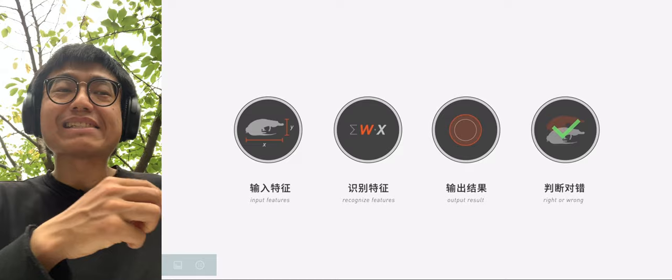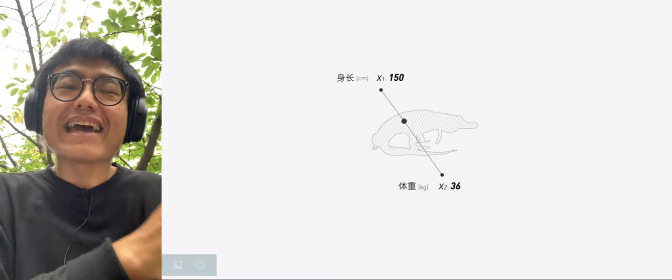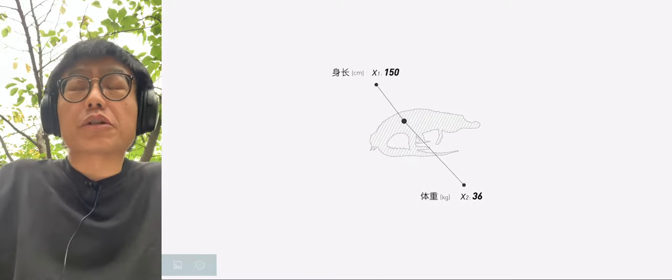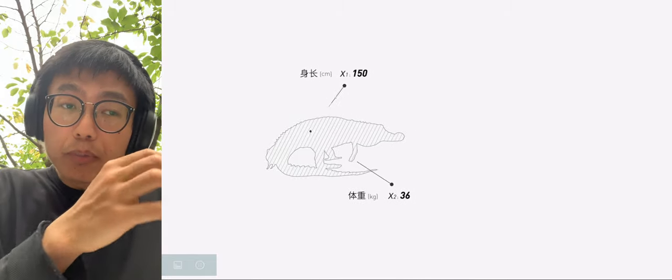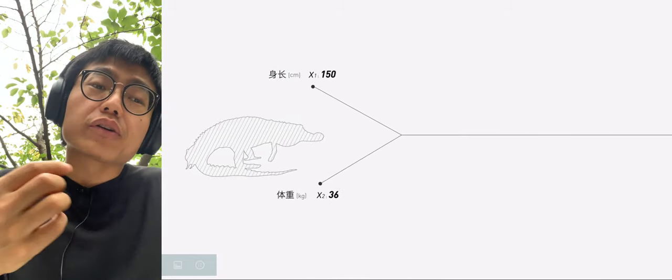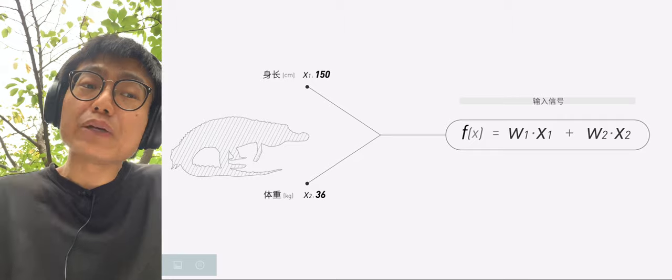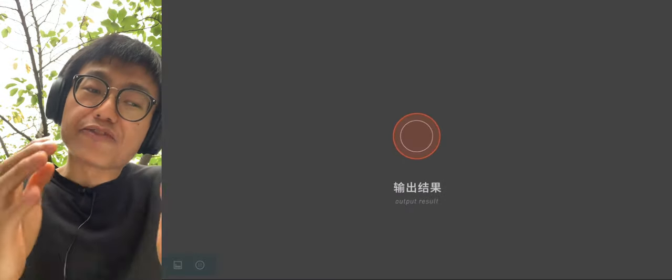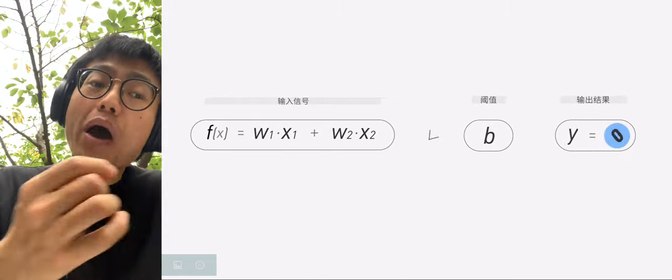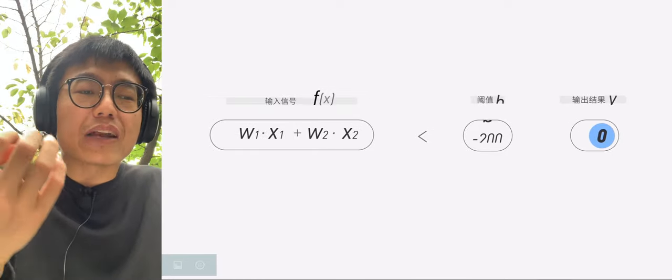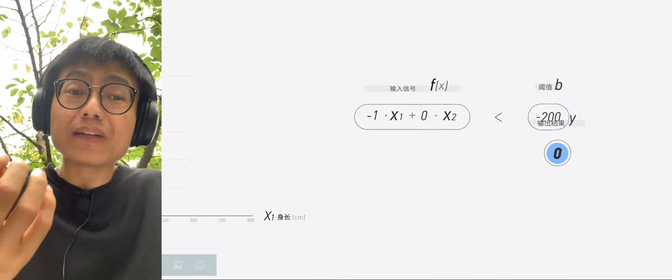Now let's see how this model automatically classifies crocodiles and snakes. The input features are the length X1 and body weight X2 of the animal. Recognized feature is to put the X1 and X2 of each point into this input formula. At this time, the input signal formula is Fx equals W1 times X1 plus W2 times X2. If Fx is greater than B, the output Y is 1. If Fx is less than B, Y is 0. If we respectively set the initial value of W1, W2, and B to negative 1, 0, and negative 200,